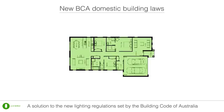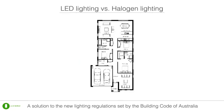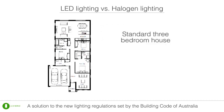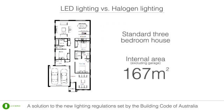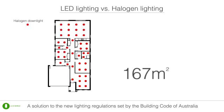This is an advantage, as it allows you to use less watts per square metre in areas which don't require large amounts of lighting, such as hallways and toilets. This is a standard sized 3-bedroom house. It has an internal area of 167 metres squared, excluding the garage. This is how a traditional halogen lighting arrangement would look.